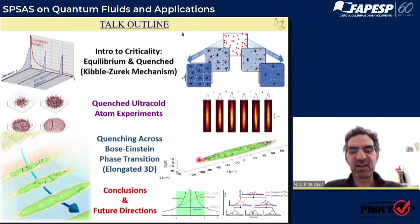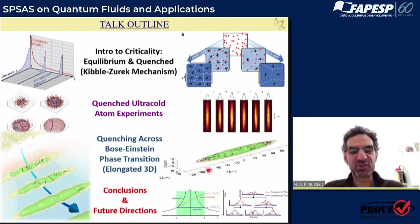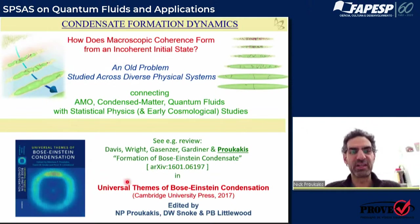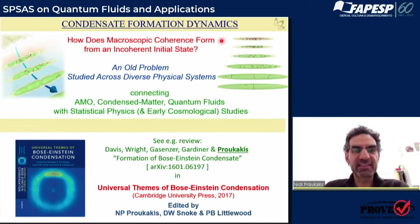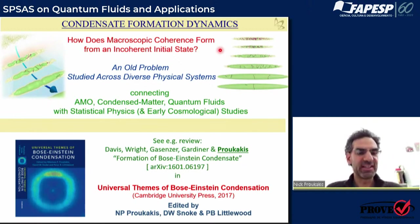What you see here is an elongated condensate — a well-formed condensate with loads of vortices in them, which have actually formed during the process of growth. Then I will try to summarize the key results. So, the question I want to address is basically: how does macroscopic coherence form from an incoherent initial state? We start with something which has no coherence, and we end up with something that has well-formed coherence, or possibly is even purely superfluid.